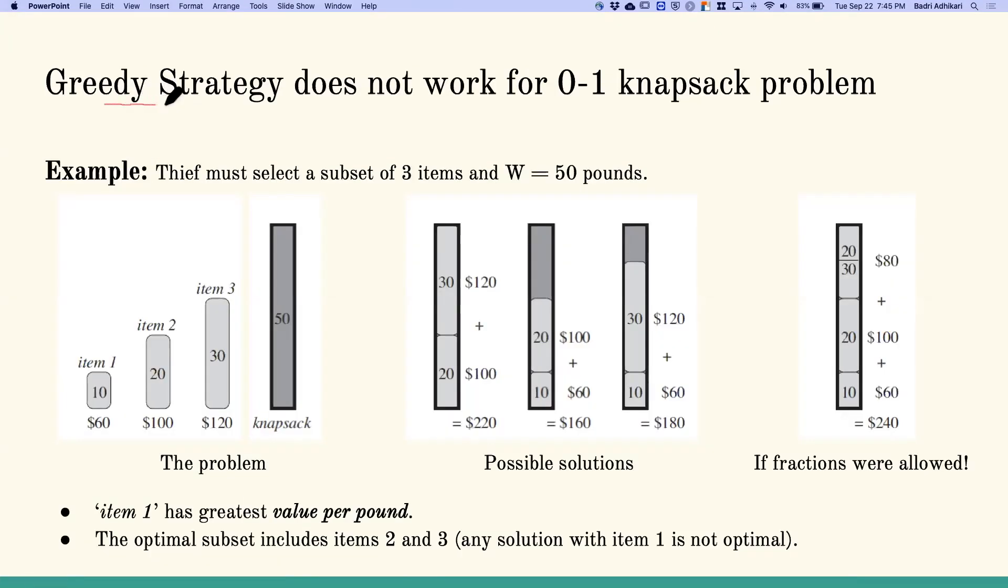Now, let us see why the greedy strategy does not work for the 0-1 knapsack problem. Say we have three items: item 1 that's worth 10 pounds and $60, item 2 worth 20 pounds and $100, item 3 worth 30 pounds and $120. And say we have a knapsack that can hold 50 pounds.